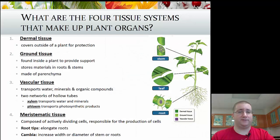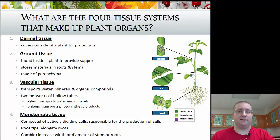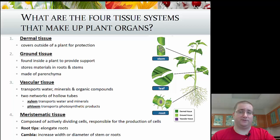These three cell types form four plant tissues. The first tissue type is known as dermal tissue. This is the tissue found on the outside of a plant — just like we have skin and go to the dermatologist for skin issues. Plants have that external coating for protection. Dermal tissue provides the skin of the plant.